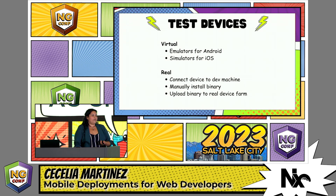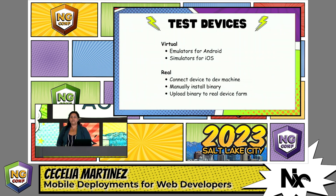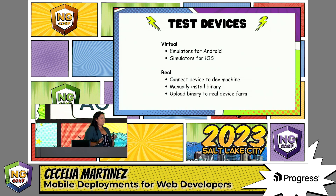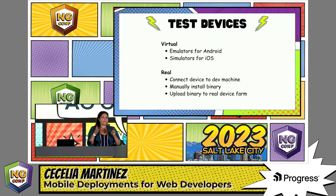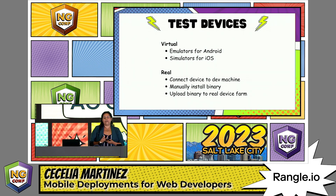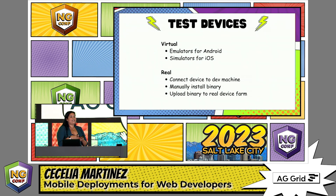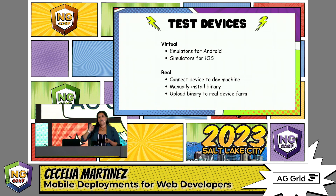For devices, you have virtual and real device options. For virtual devices, you have emulators for Android and simulators for iOS. There are a couple of technical specifications that make them different, but really it's a piece of software emulating a hardware device. Ultimately, you can't really replicate those hardware interactions you'd have on a real device, so you will need to do real device testing. You can do this by connecting a device to your dev machine, manually installing the binary on developer devices, or uploading your binary to a real device farm — like AWS Device Farm, Sauce Labs, or BrowserStack — to run automated or manual tests on real devices in the cloud.